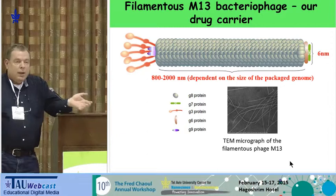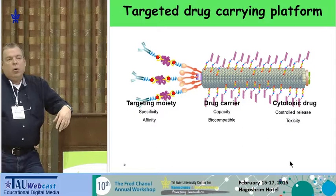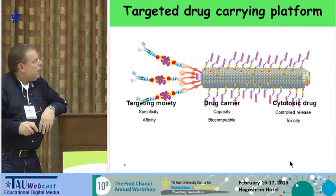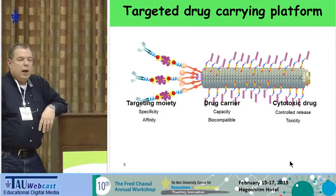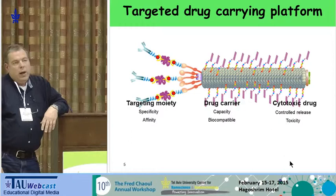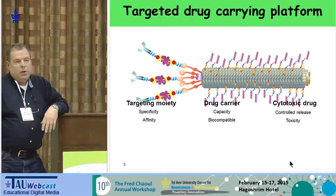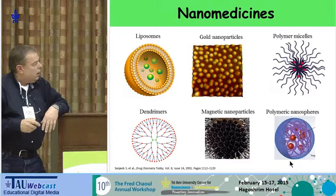Before you ask why we're using a virus for drug delivery — as Sir Edmund Hillary said about Everest, because it was there. We use this particle very often in our day-to-day work in antibody discovery, and for many years we've been able to put antibodies on one end. If we already know how to put antibodies on the end of the particle, we have a targeted particle, and it reduces to the matter of connecting drug to the particle in a controlled manner. The virus itself acts as the drug carrier.